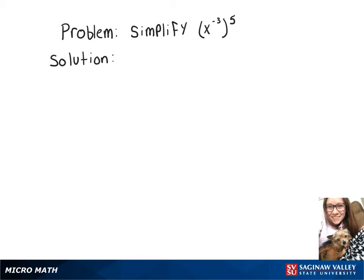We want to simplify x to the negative 3 raised to the 5th power. So we're going to multiply those exponents, giving us x to the negative 3 times 5. That'll give us x to the negative 15.